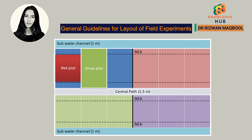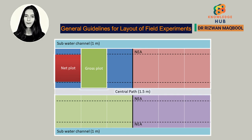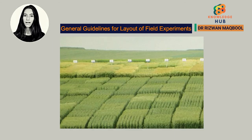7. The crop should be sown on gross plot and all the inputs should be applied on the basis of gross plot. The net plot should be harvested before the harvest of non-experimental area or spaces. 8. There should be no demarcation of bunds or alley in between the experimental and non-experimental area of the plot.